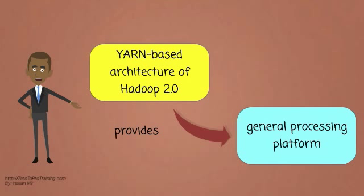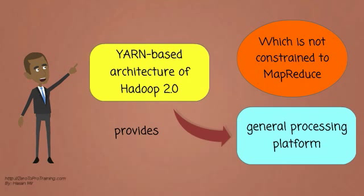The YARN-based architecture of Hadoop 2 provides a general processing platform which is not constrained to MapReduce.